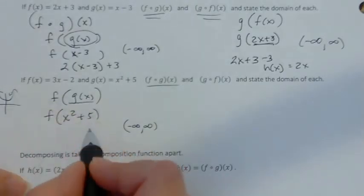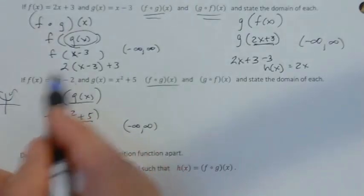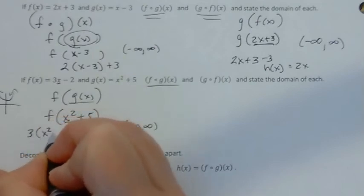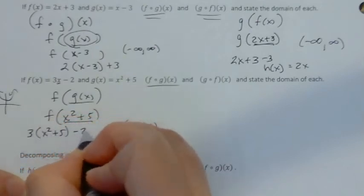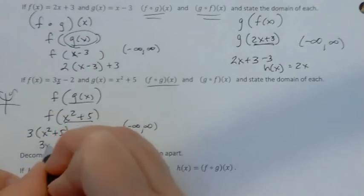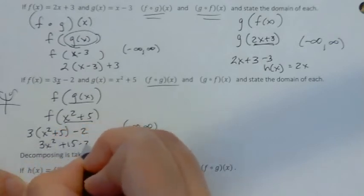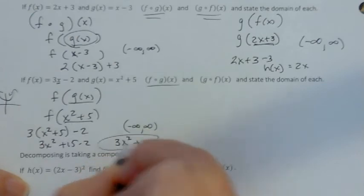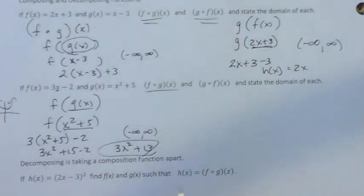So now I'm going to use x squared plus 5 as the input in the f function. So I'll have 3 times (x squared plus 5) minus 2. So it would be 3x squared plus 15 minus 2. So 3x squared plus 13. That's also a quadratic, so it doesn't need to be tweaked at all.